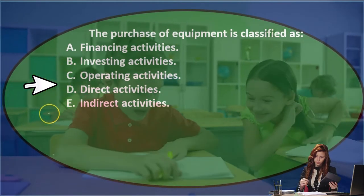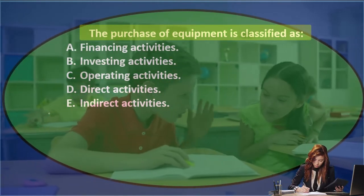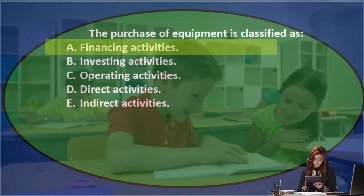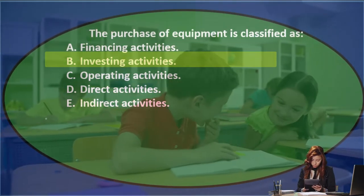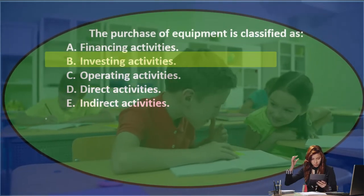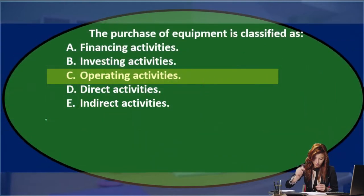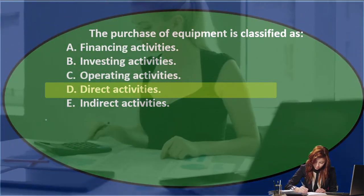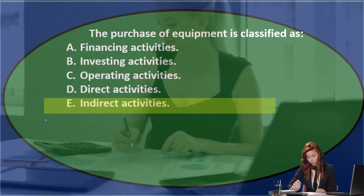Next question: the purchase of equipment is classified as A, financing activity; B, investing activities; C, operating activities; D, direct activities; or E, indirect activities.